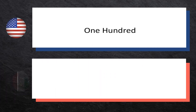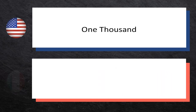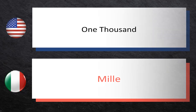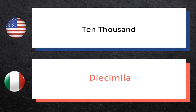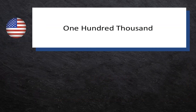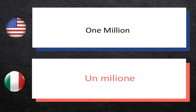One hundred, cento, cento. One thousand, mille, mille. Ten thousand, diecimila, diecimila. One hundred thousand, centomille, centomille. One million, un milione, un milione.